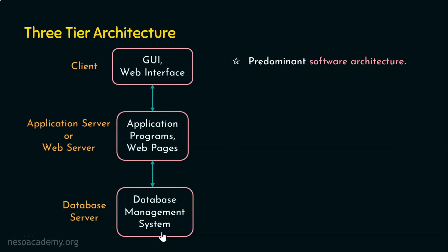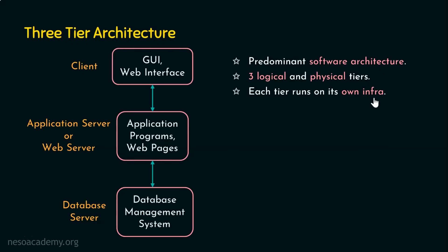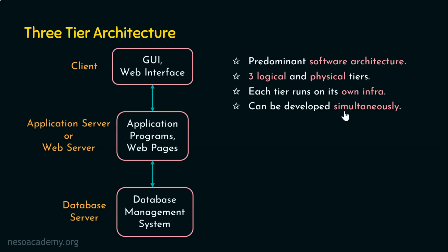When we talk about distributed systems or remote access, three-tier architecture is the predominant software architecture for client-server applications. As the name suggests, there are three logical and physical tiers, and these tiers are logically and physically separated. Each tier runs on its own infrastructure — the client tier, the application server, and the database tier each have their own infrastructure. Since they have their own infrastructure, these tiers can be developed simultaneously.